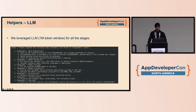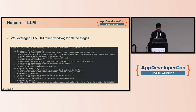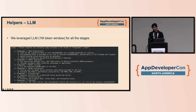We also leveraged LLMs quite a bit. One example prompt I've shown here — it's going to use around 1 million tokens for context — and this was used for generating the first step: helping us generate and fit the model we're trying to fit for the sample data we had.